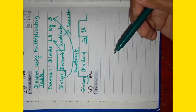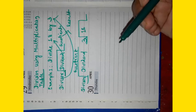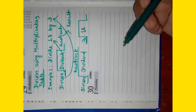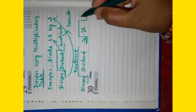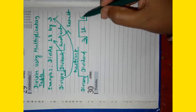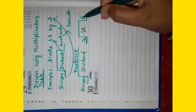3 ones are 3, 3 twos are 6, 3 threes are 9, 3 fours are 12, 3 fives are 15, 3 sixes are 18. We have to write 6 in the quotient.